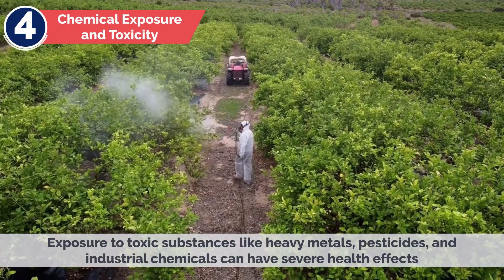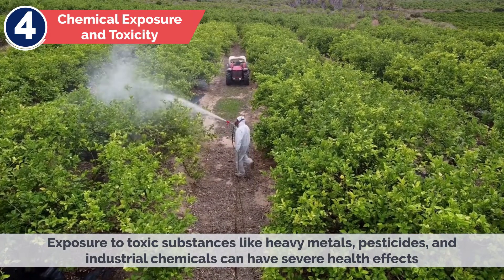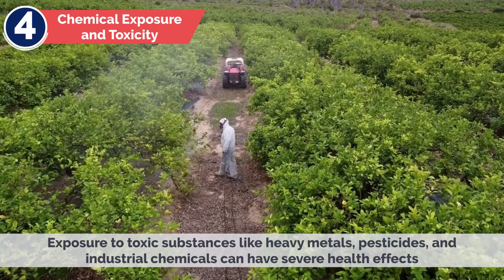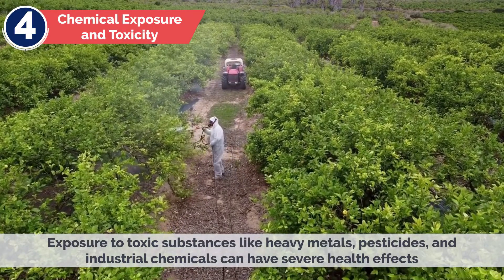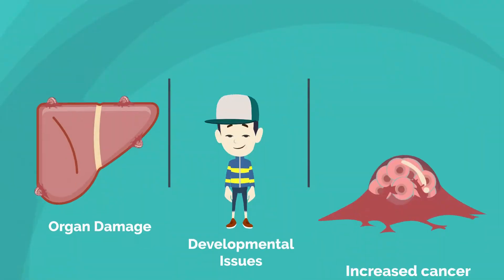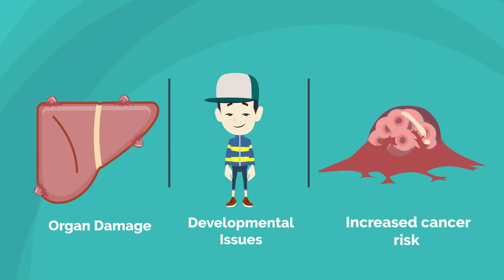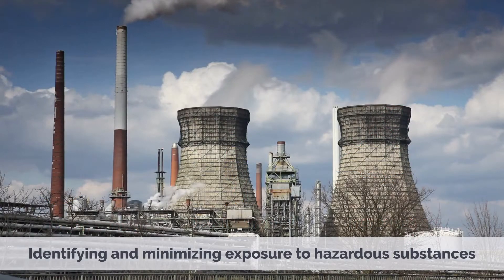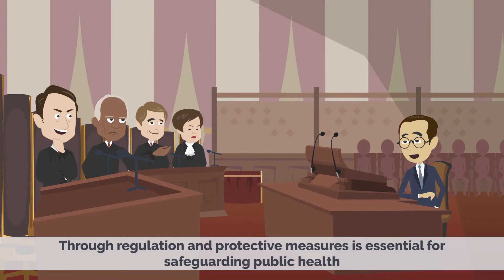Exposure to toxic substances like heavy metals, pesticides, and industrial chemicals can have severe health effects, including organ damage, developmental issues, and increased cancer risk. Identifying and minimizing exposure to hazardous substances through regulation and protective measures is essential for safeguarding public health.